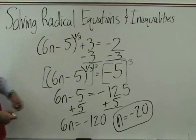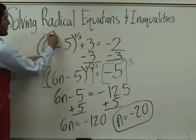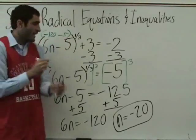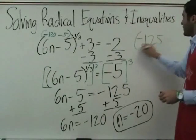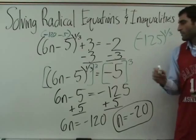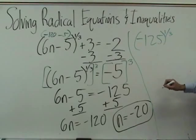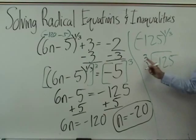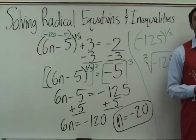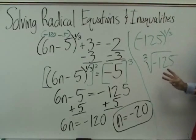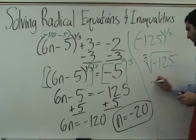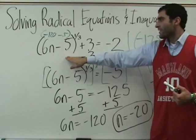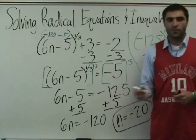Does it work? Well, 6 times negative 20. Let's try it out. Negative 20 minus 5 to the one-third. So yeah, let's do it. This is negative 120 minus 5. That's negative 125 to the one-third. Negative 125 to the one-third, which is really the cube root of negative 125. Cube root means what times what times what equals what's inside here. And the answer is negative 5. So this whole junk in the chunk is negative 5. Negative 5 plus 3 is negative 2. So it works. This one works.